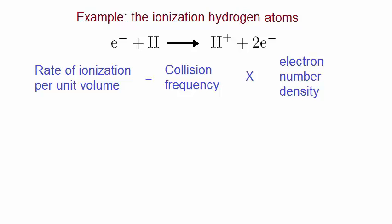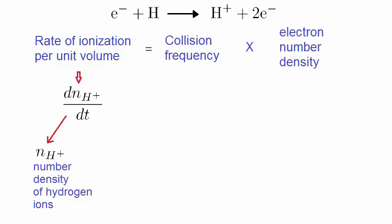Mathematically, this is given by this, where n subscript h plus is the number density of hydrogen ions. We can now use the term we derived earlier for the collision frequency, n sigma h, where n subscript h is the hydrogen atom number density, times the electron number density.